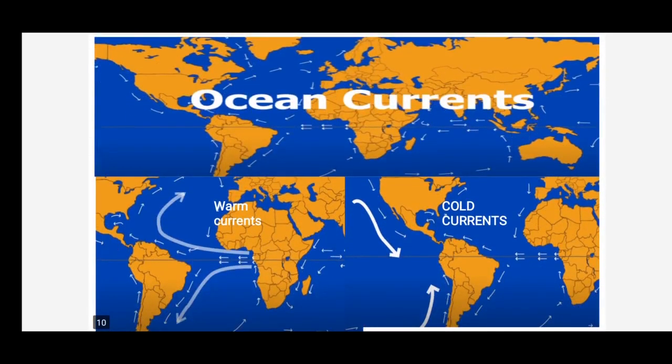Now let's move to the next climatic control, that is ocean currents. Ocean currents are nothing but a river-like movement of surface seawater from equator to poles and poles to equator. These large masses of surface water of the ocean circulate in regular patterns — they flow in the same direction around the ocean. There are two types of ocean currents: warm ocean currents and cold ocean currents.